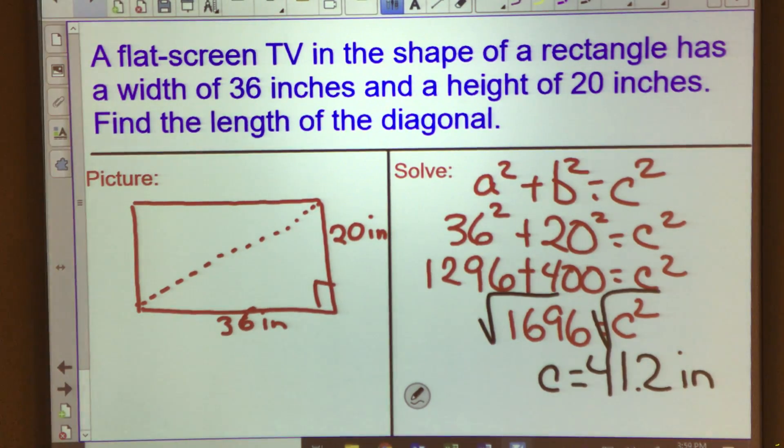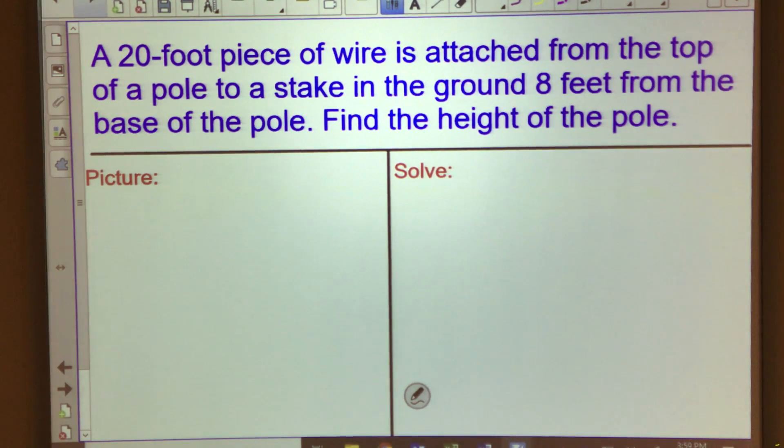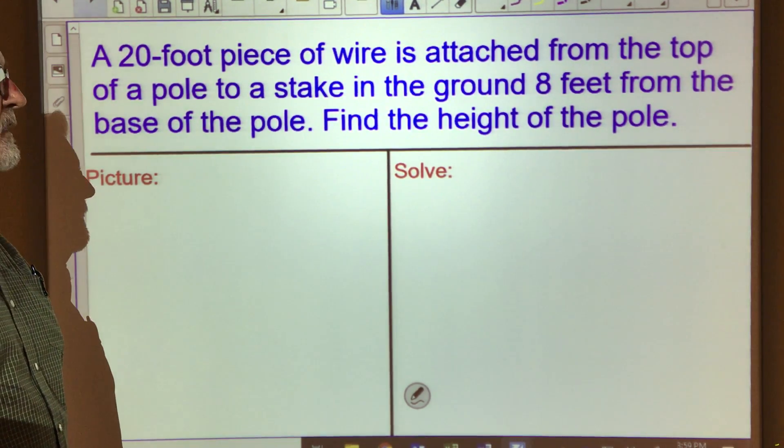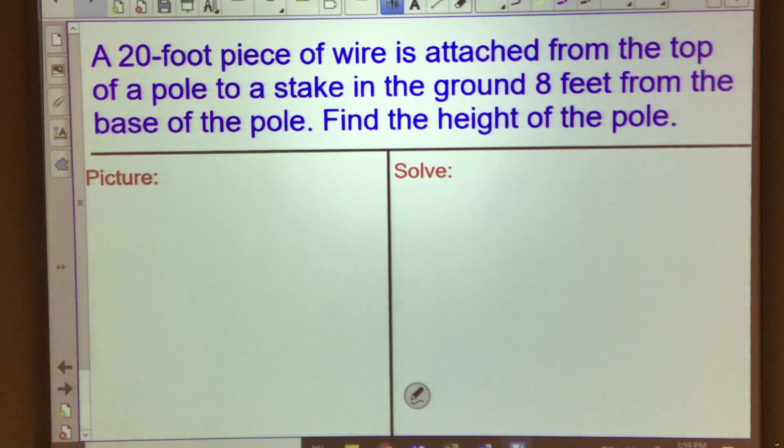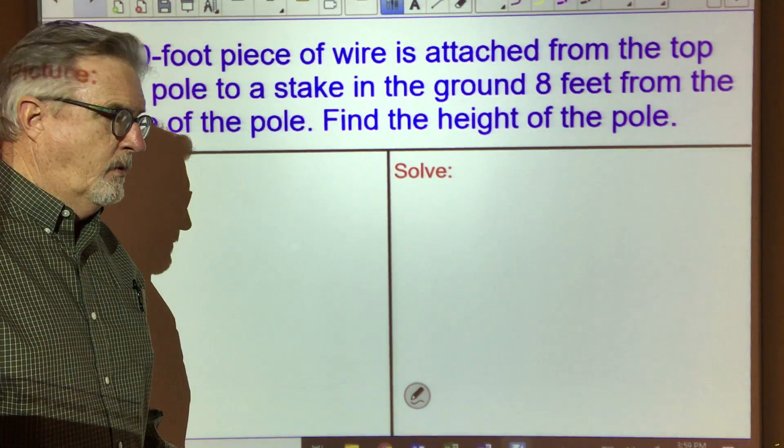All right, let's try one more example before you get started on your own. On this one, the situation is we have a 20-foot piece of wire and that wire is attached from the top of a pole to a stake in the ground 8 feet from the base of the pole. And it says to find the height of the pole.